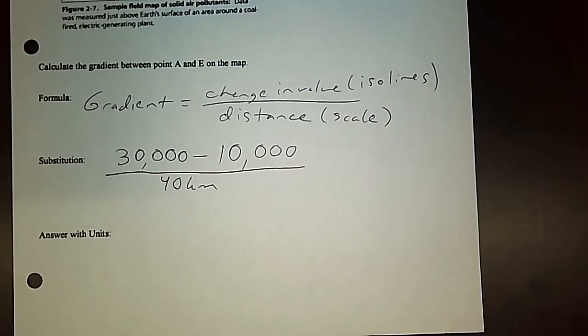And then you're carefully going to type that into the calculator. 30,000 minus 10,000, which should give you 20,000, divided by 40. And you should get 500.